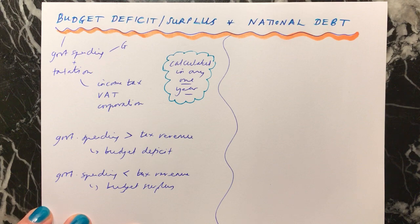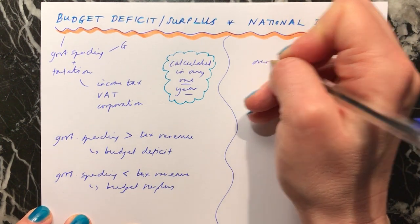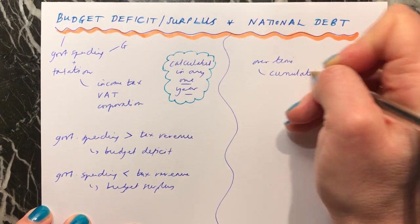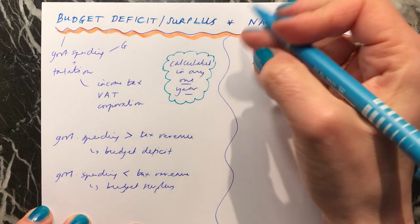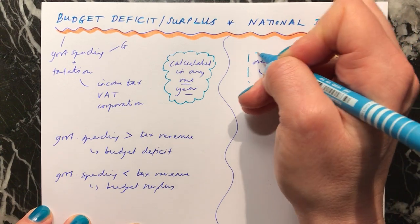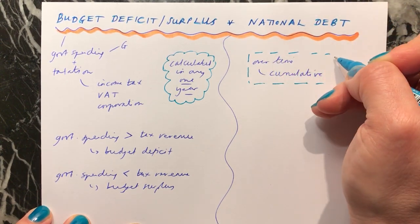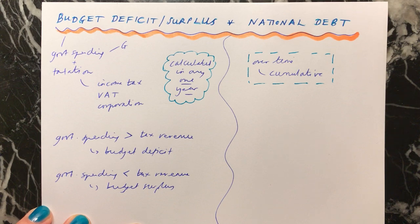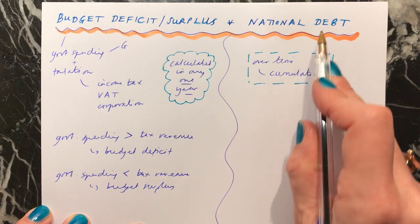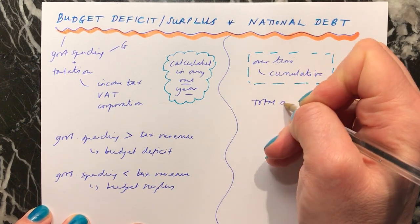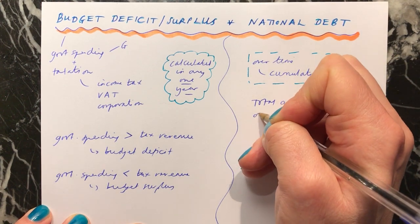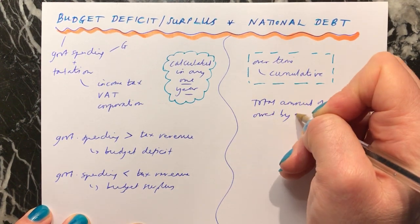National debt is something that we're looking at over time. This is what we call cumulative — if something is cumulative, we're adding on to it more and more, or taking away from it, but you're looking at what it's like over a long period of time. Whereas a budget deficit or surplus is just what's happening in any one year, national debt is the total amount of money owed by a government.